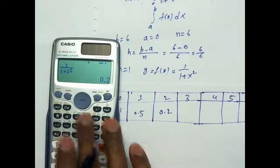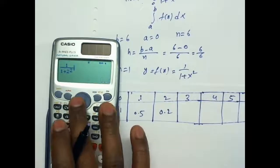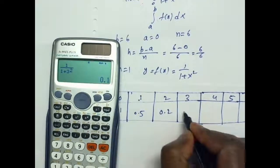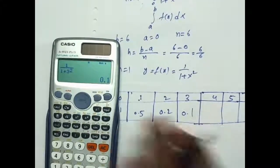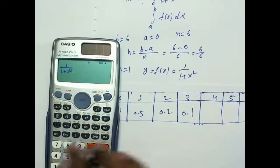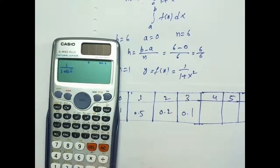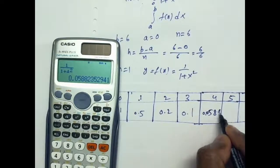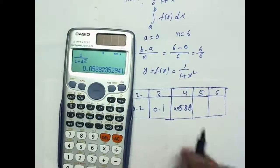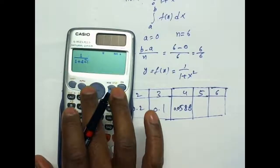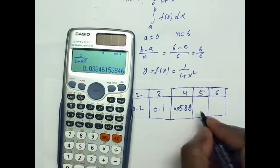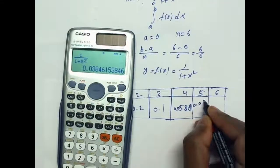For x equal to 3: 1 by 1 plus 3 square equals 1 by 10, that is 0.1. For x equal to 4: 1 by 1 plus 4 square equals 1 by 17, approximately 0.0588. For x equal to 5: 1 by 1 plus 5 square equals approximately 0.0384.